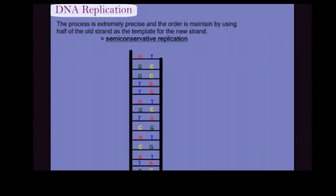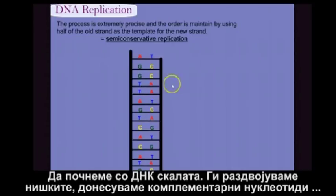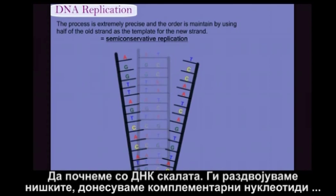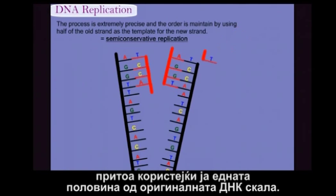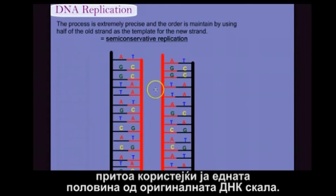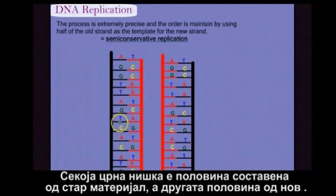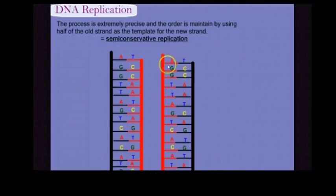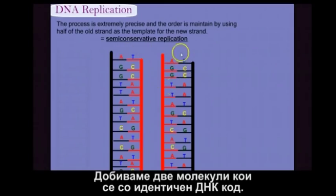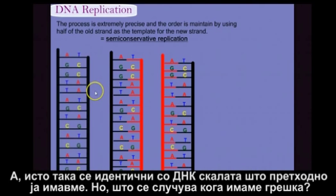A quick recap will again highlight the semi-conservative nature of this process. We start with our original ladder, separate the strands, and bring in complementary nucleotides. As we continue the process, we can see that instead of building a whole new DNA molecule, we're actually conserving half of the original molecule and building only a new second half. So each strand is half old material and half new material. This ensures the conservation of the code, because we're building off an existing template with a rigid pairing requirement — every thymine with adenine, every cytosine with guanine — giving us two molecules identical to each other and to the original.